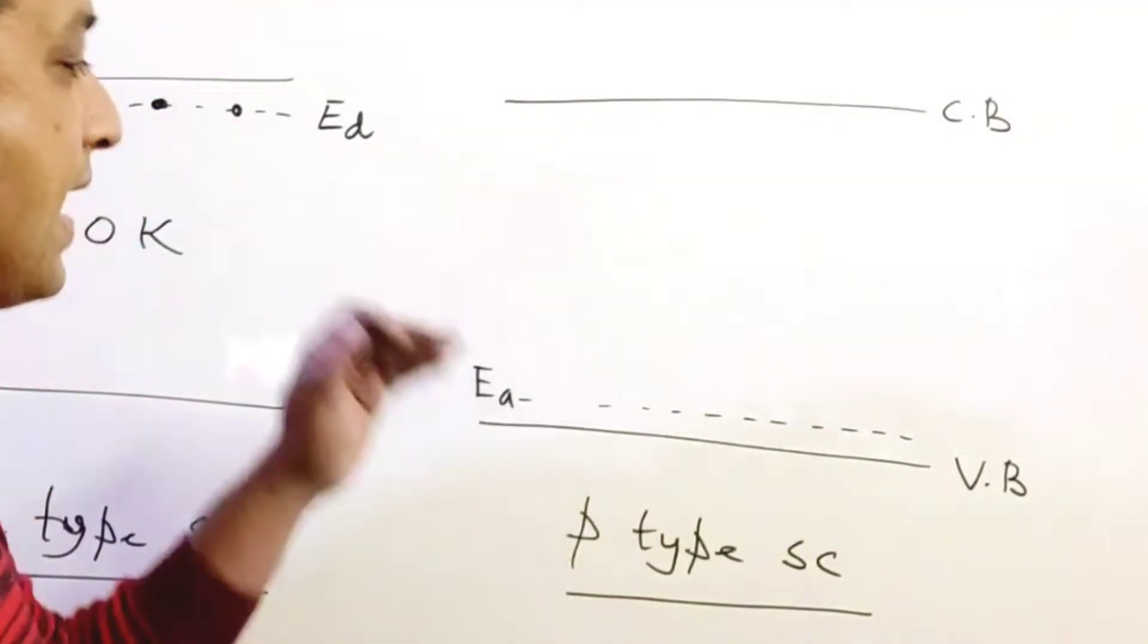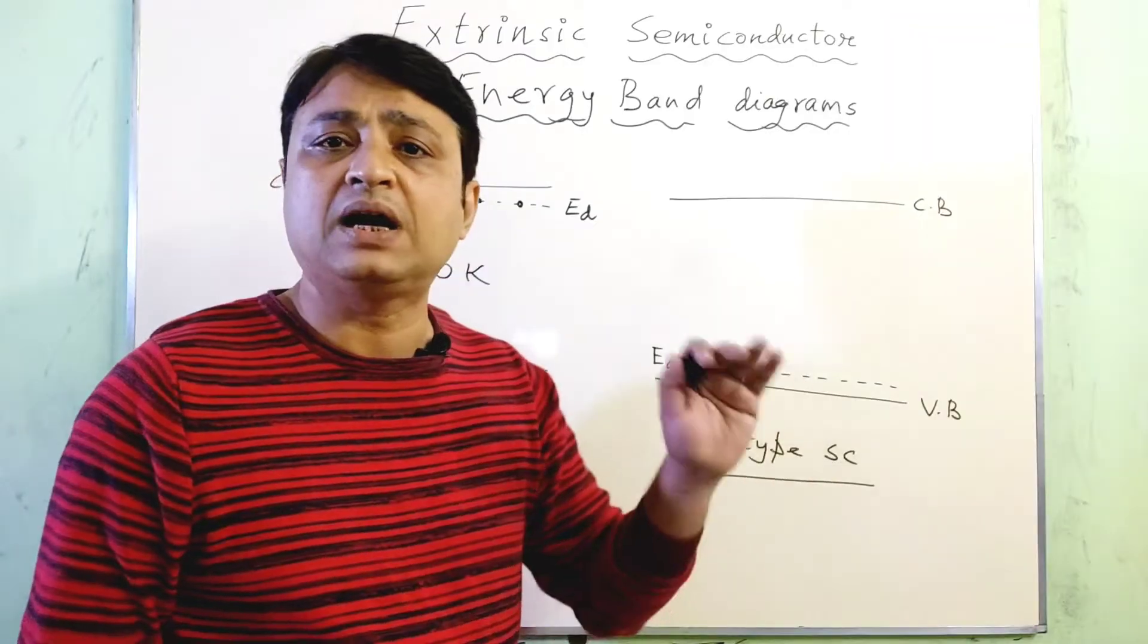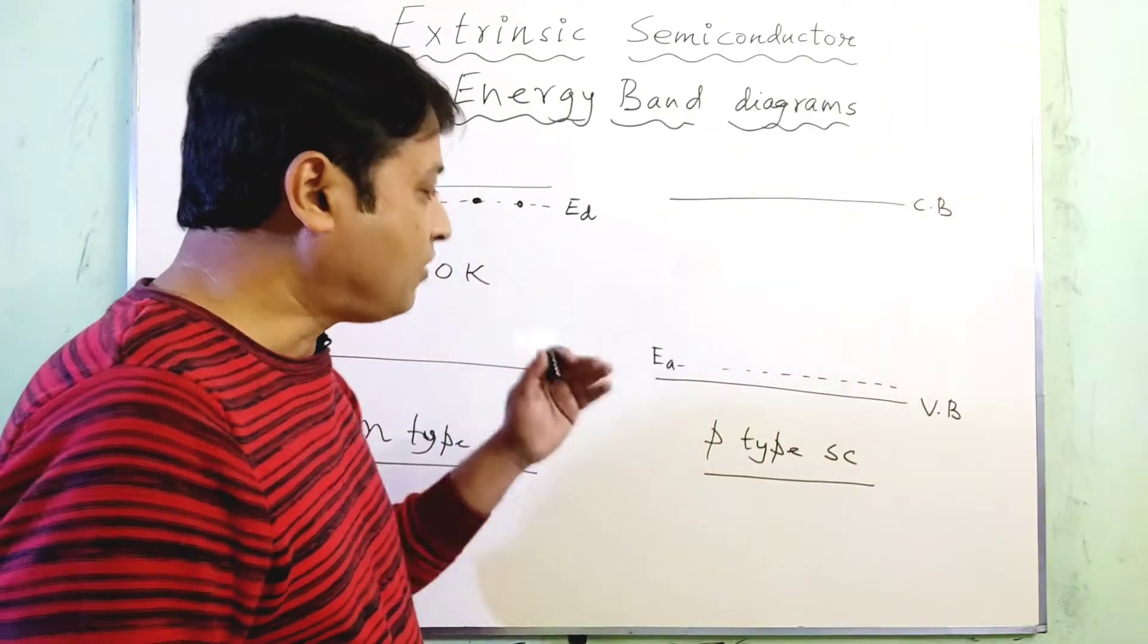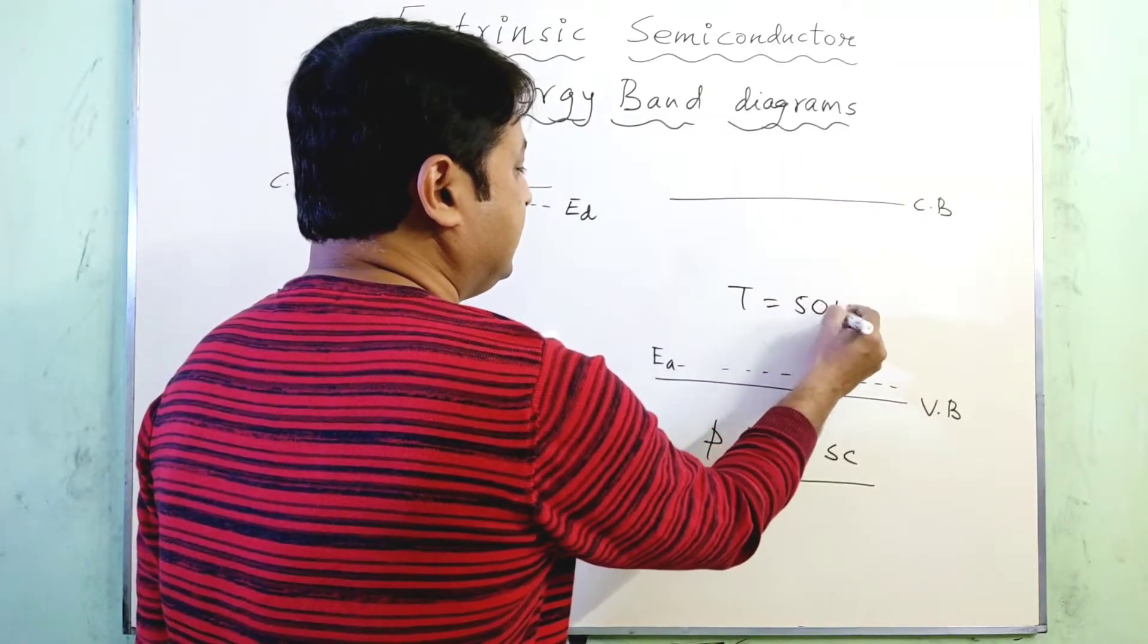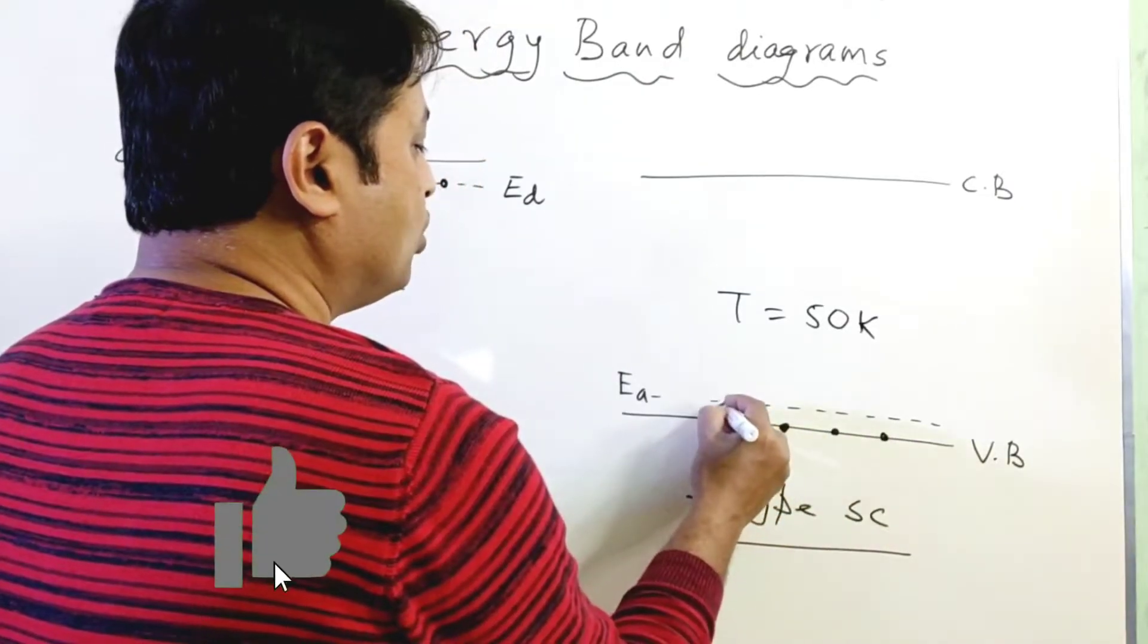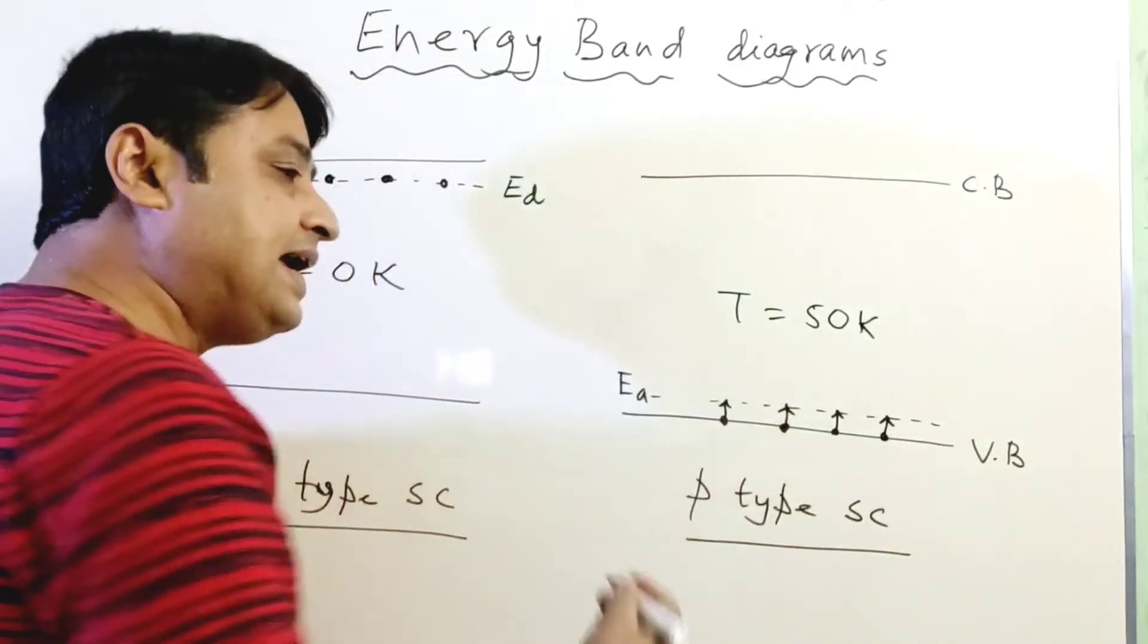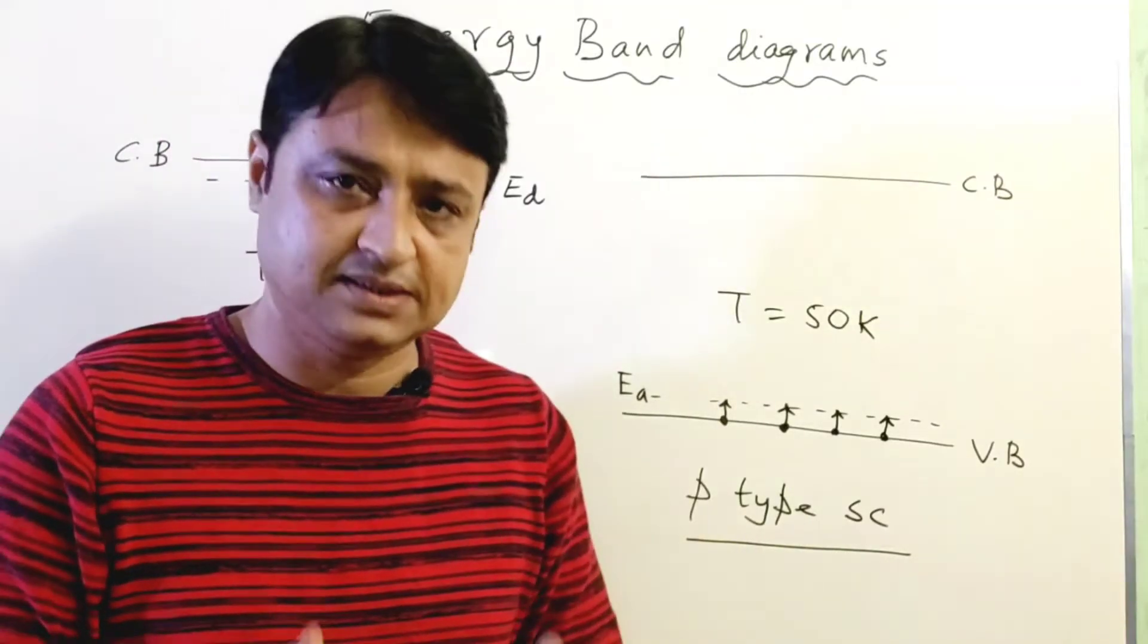So at T equals to 0 Kelvin, this acceptor level will be completely empty of electrons. Now for T equals to 50 Kelvin energy, electrons from the filled valence band will move towards the acceptor level and they leave behind the number of holes inside the valence band.